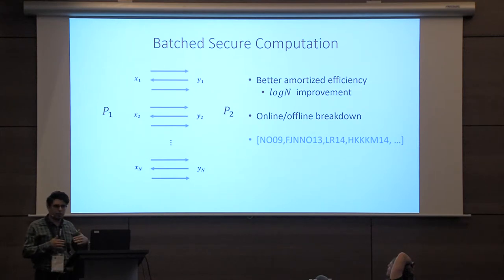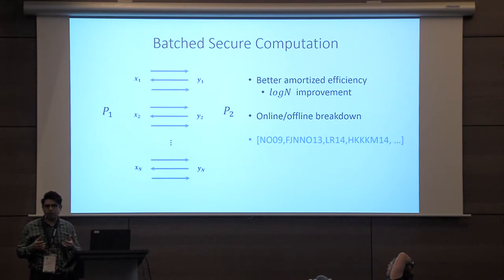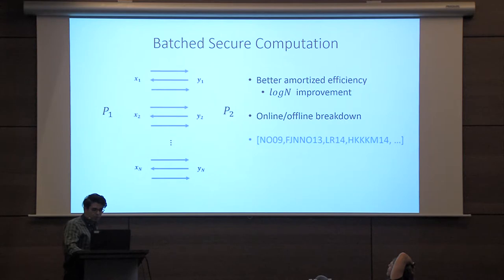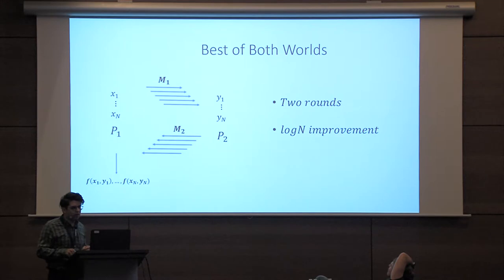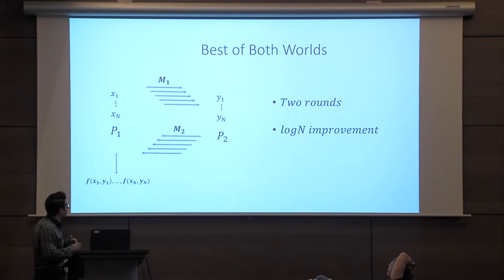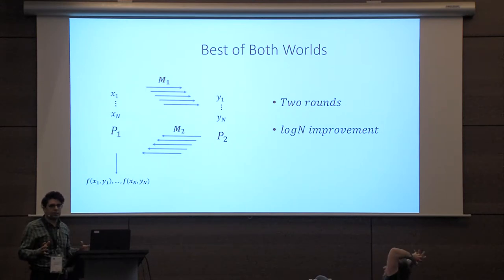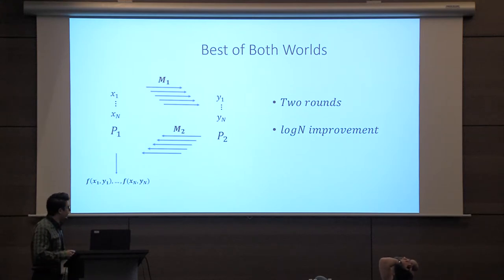Batch execution has a nice feature: you can do the bulk of the computation in an offline phase where you don't know the inputs, and then have a very fast online phase that is not proportional to the size of the circuit. But the solutions we know require multiple rounds, so they are not non-interactive. What we were hoping for is to get the best of both worlds — many secure executions with different inputs, only two messages sent and received, and the same concrete gains.